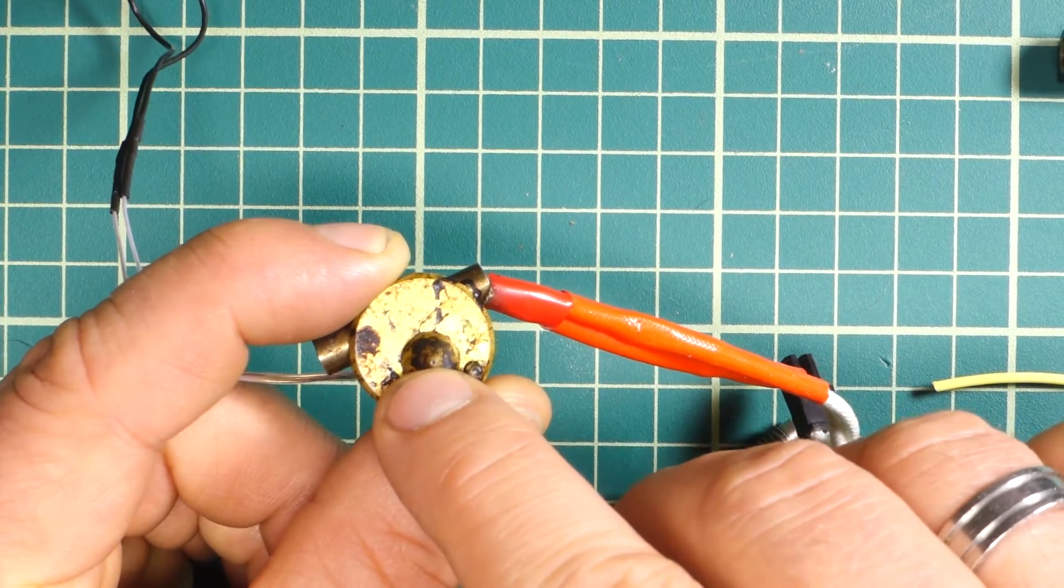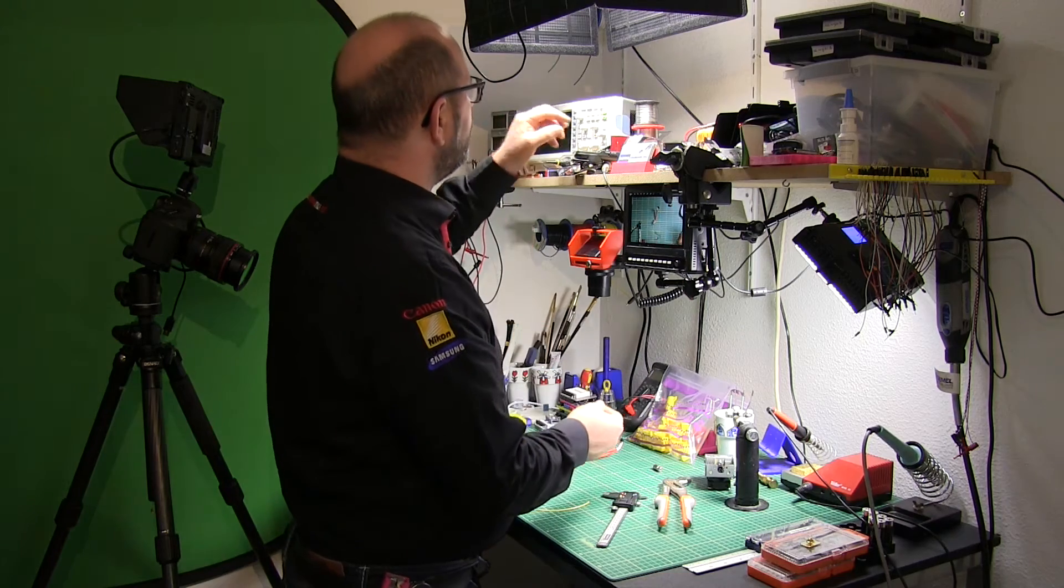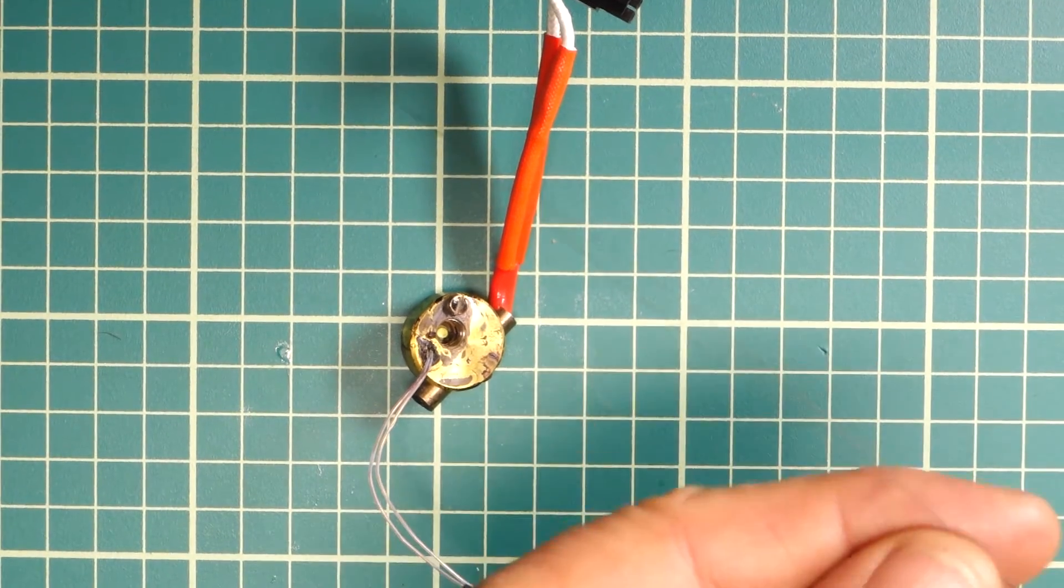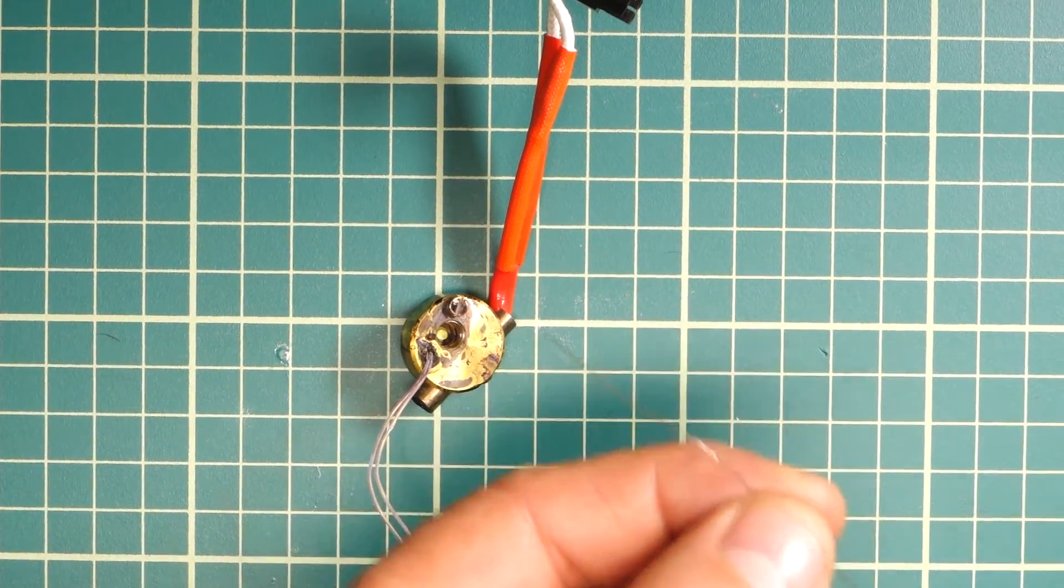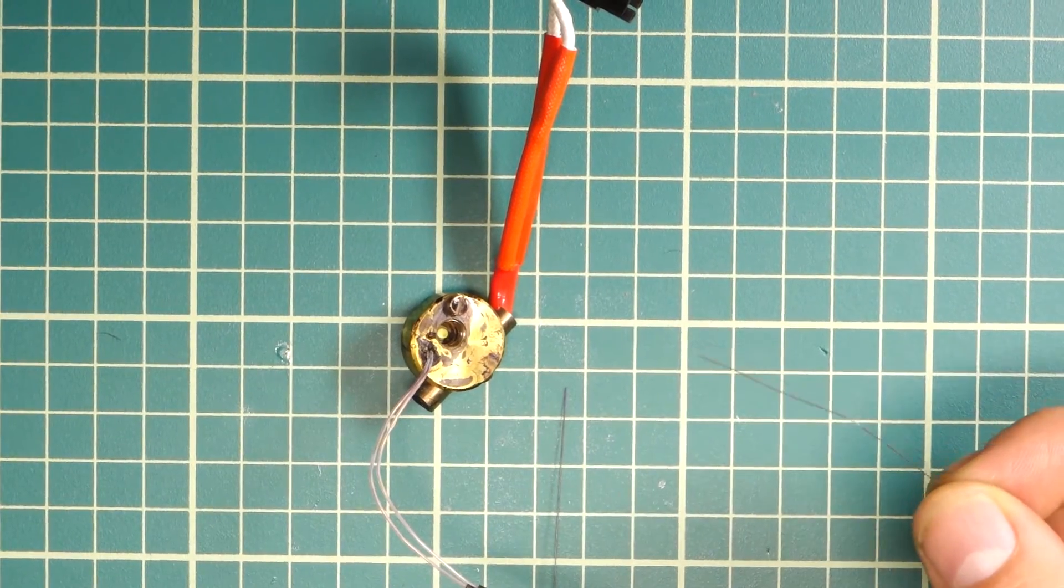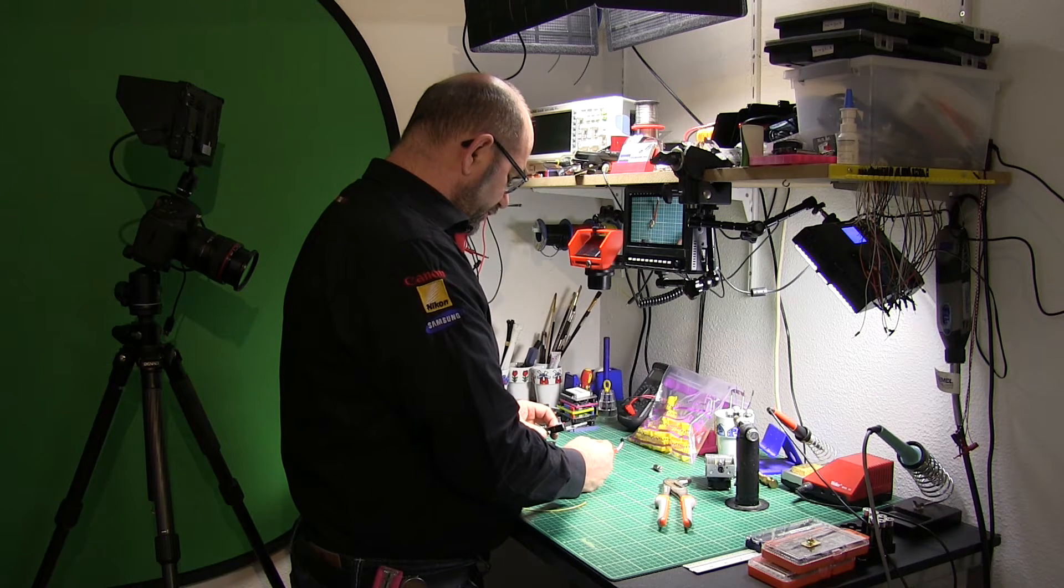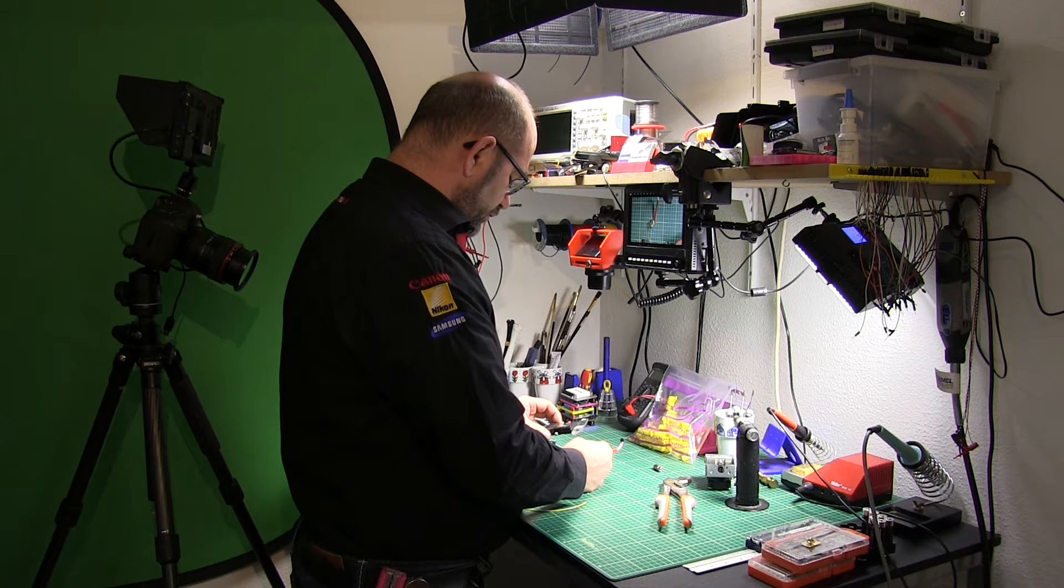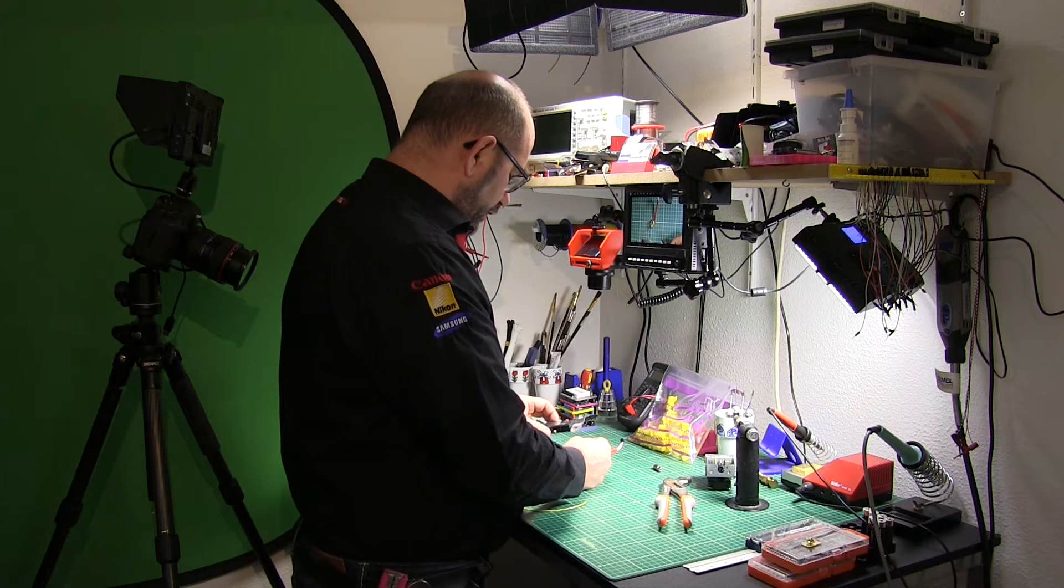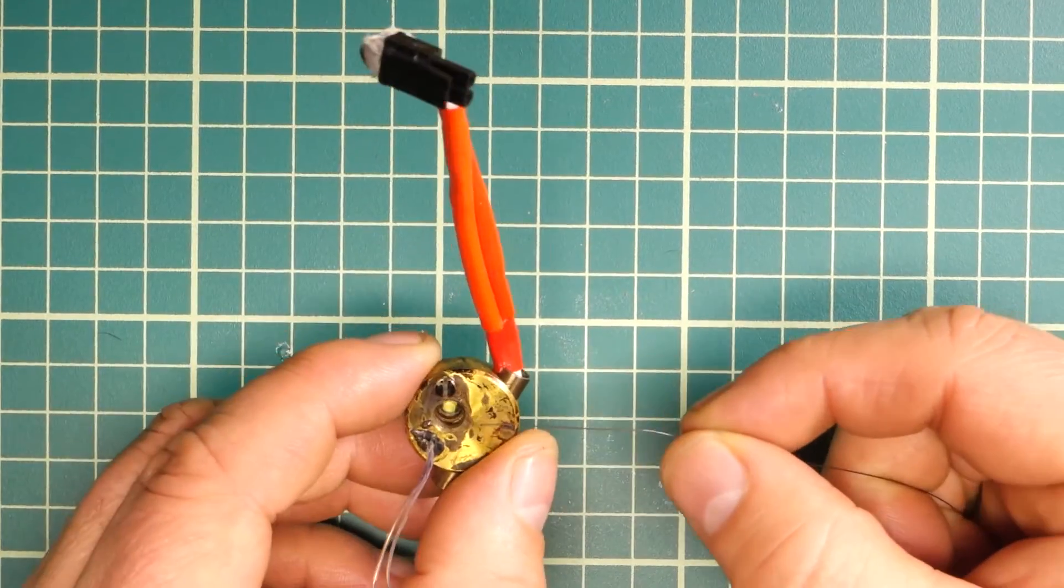So now what I did—and I hope my camera can zoom in a little just to show you guys—I took some guitar wire. This is the high E string of my electric guitar and this has a thickness of 0.21 millimeters. So in theory this should be good to unclog this nozzle.